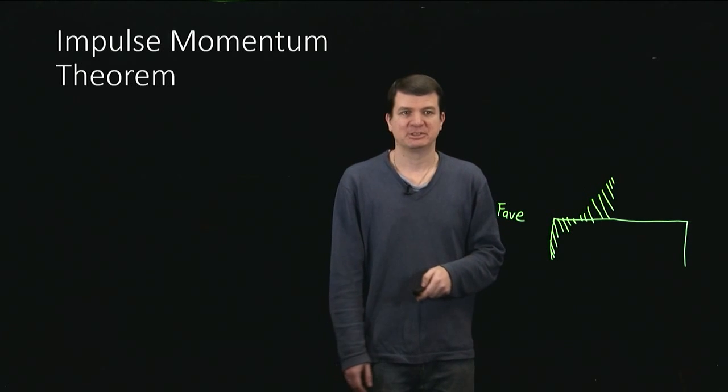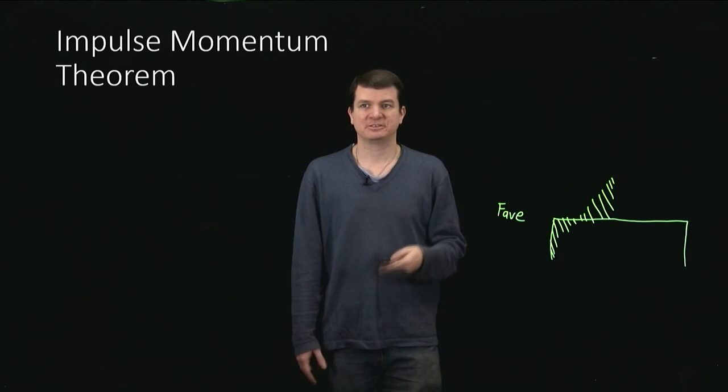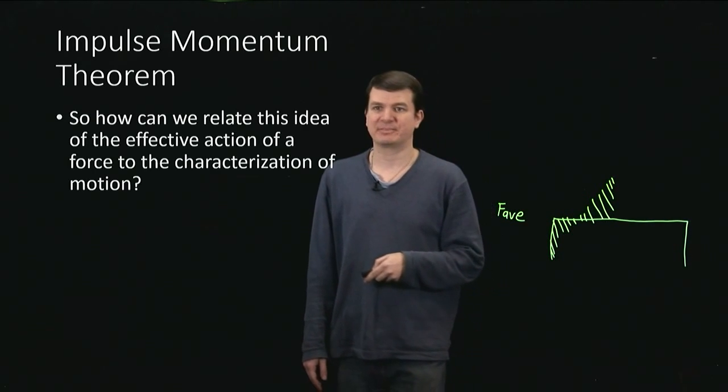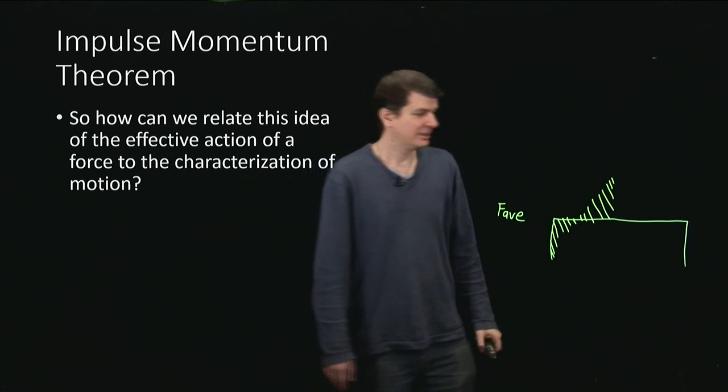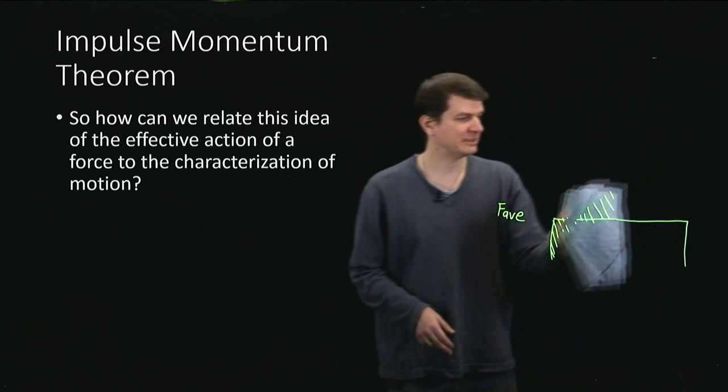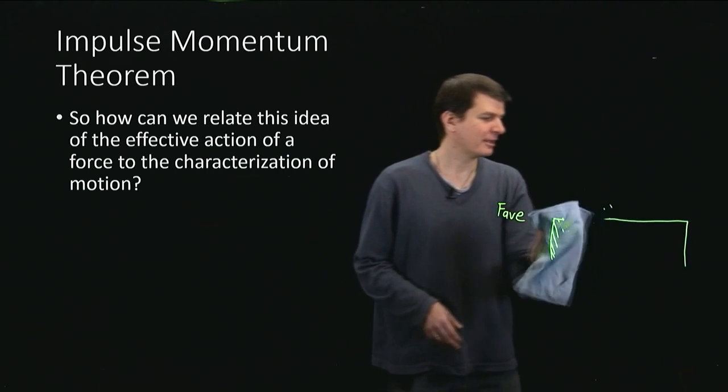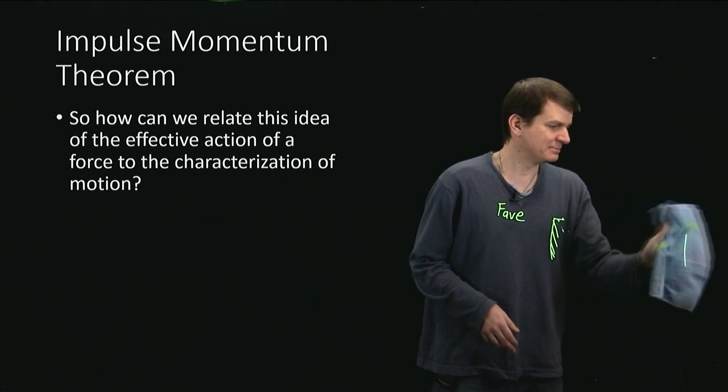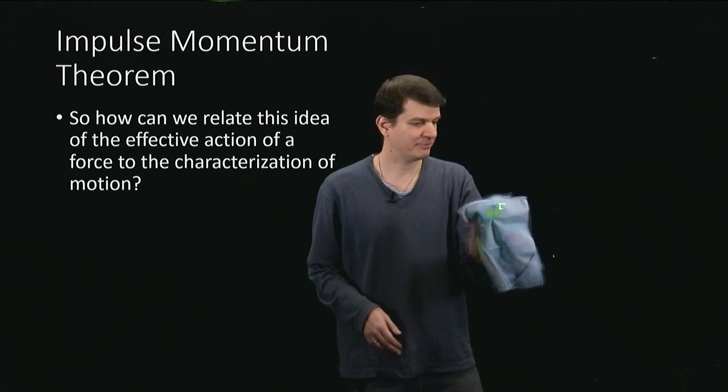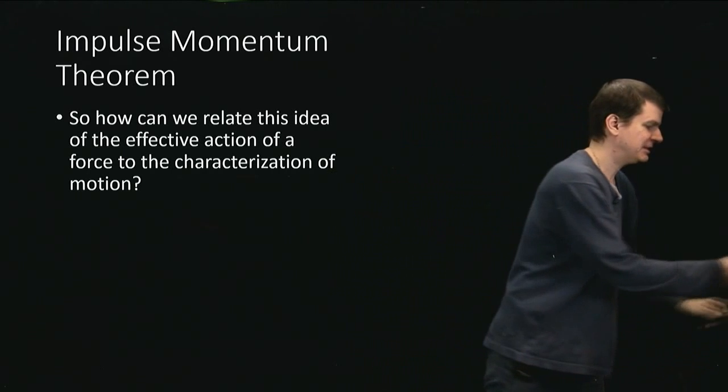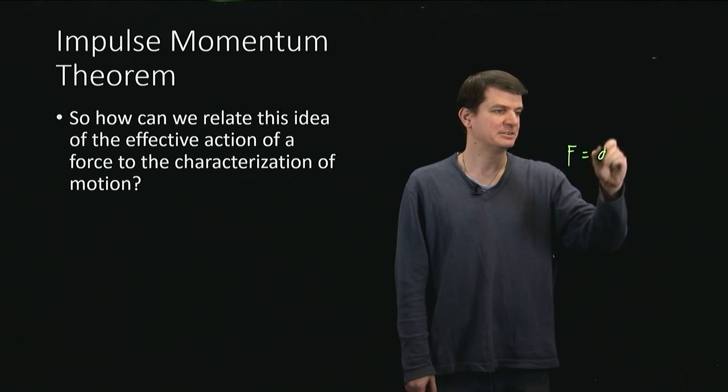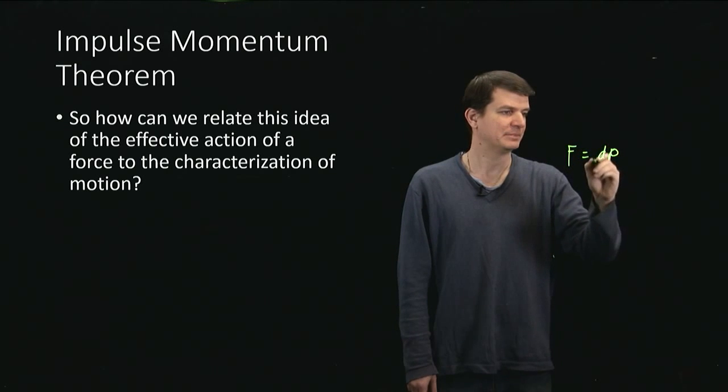So how can we relate this impulse to something about what happened with the actual motion? So that's the question before us. And the answer to that is that we can think about Newton's laws yet again. So if we think about Newton's laws, and we remember the information from our video on momentum, then we know that we can write down Newton's second law as F = dp/dt.